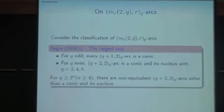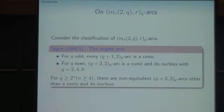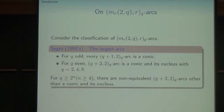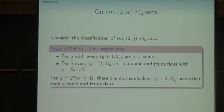Next, we consider the classification problem of the largest arc. By Segre (1950s), for Q odd, every (Q+1, 2) arc is a conic. For Q even, a (Q+2, 2, Q) arc is a conic and its nucleus when Q equals 2, 4, or 8. But for Q greater than or equal to 16, there are non-equivalent (Q+2, 2, Q) arcs other than the conic and its nucleus.